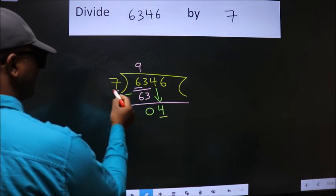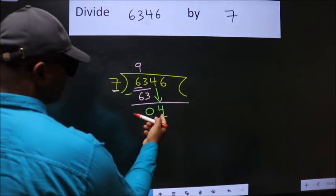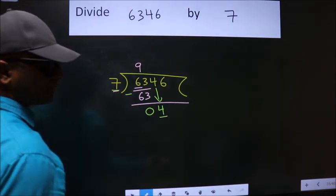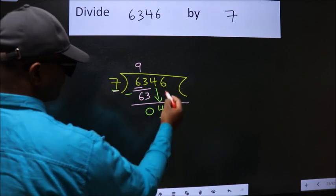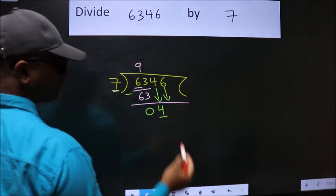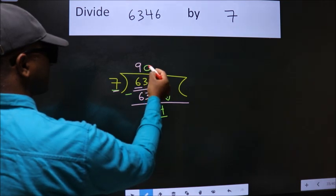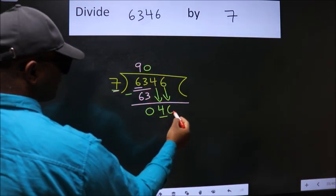Here we have 4. Here 7. 4 is smaller than 7, so we should bring down the second number. And the rule to bring down second number is put 0 here. Then only we can bring down this number.